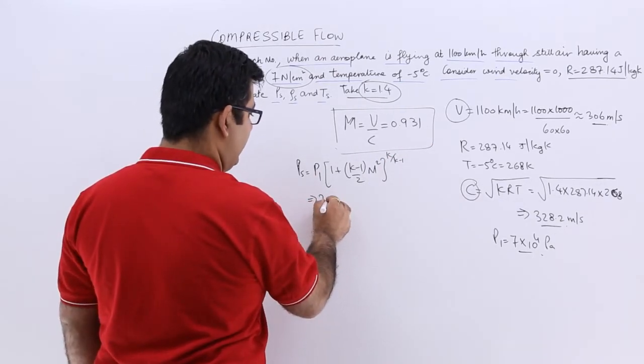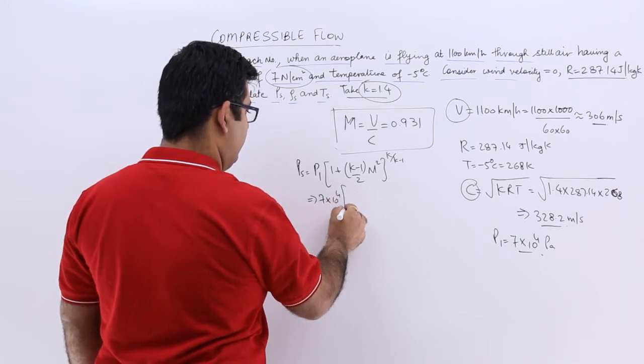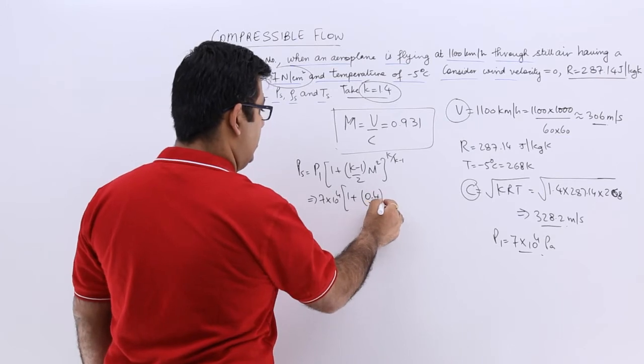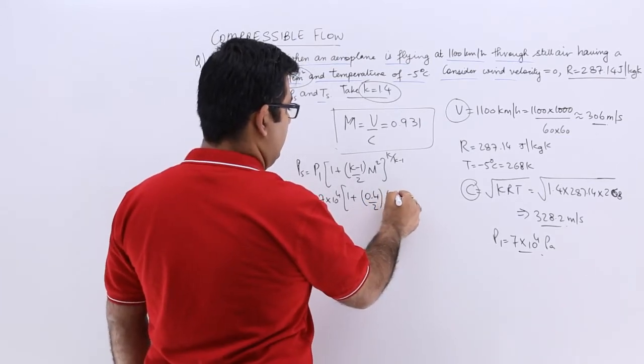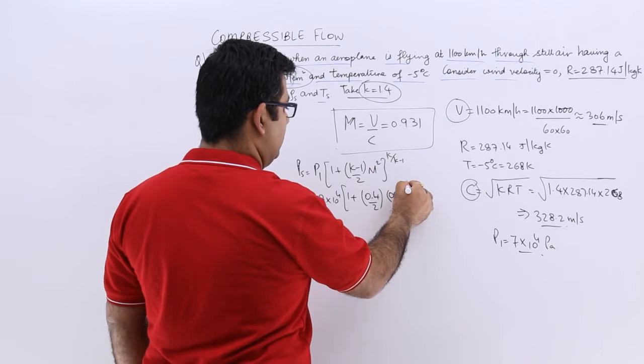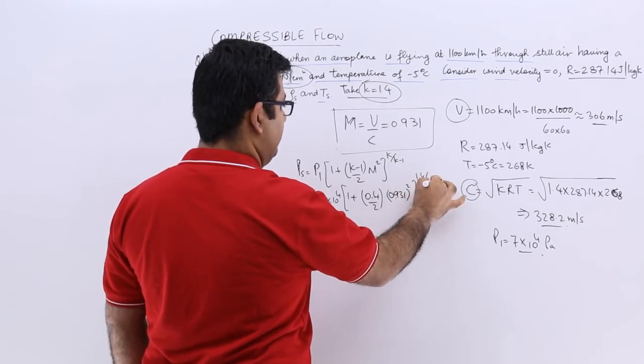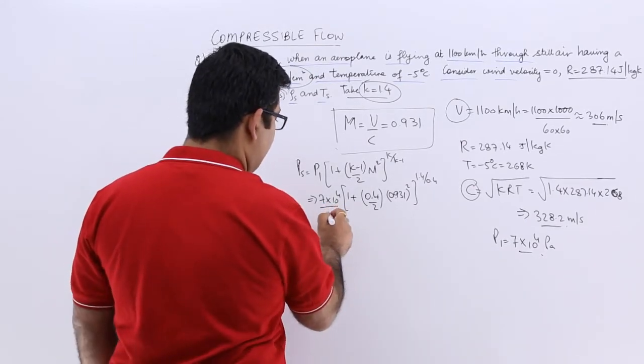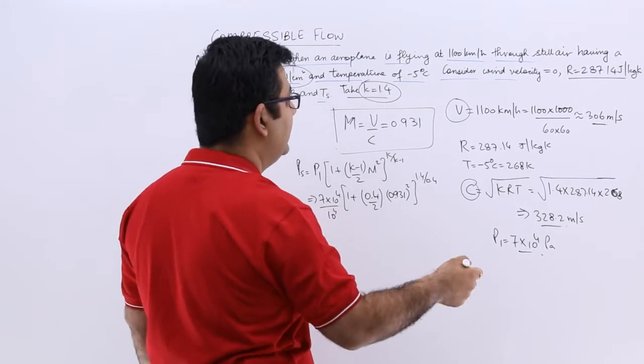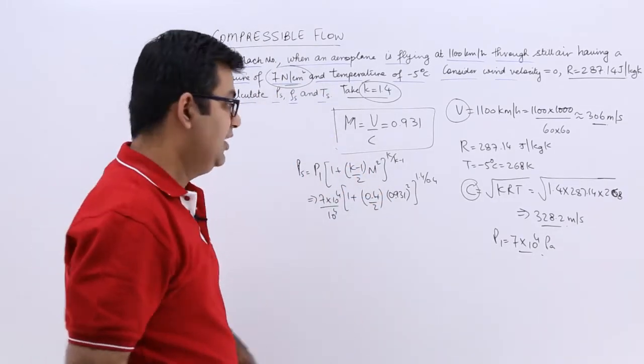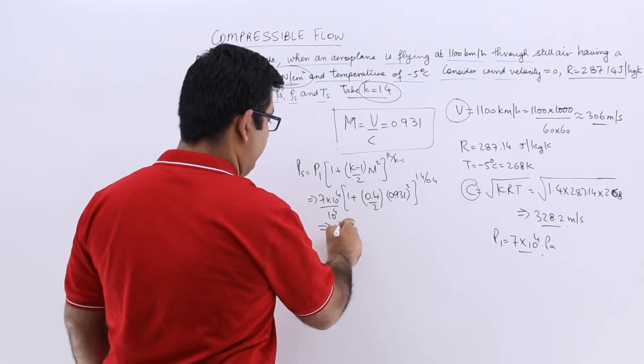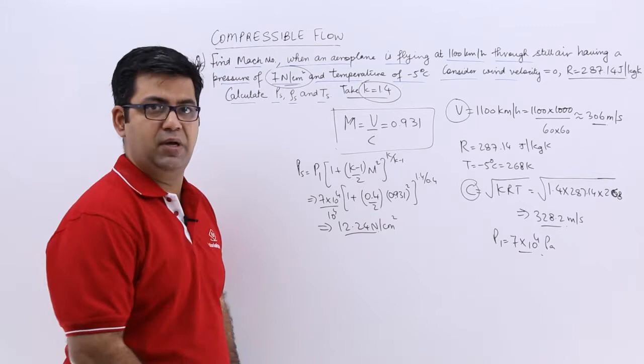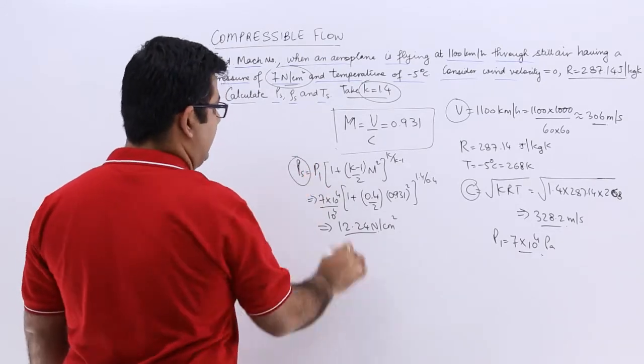So plug in the value, so you will have 7 into 10 to the power 4 into 1 plus 0.4 by 2 into 0.931 square upon 1.4 by 0.4. So upon calculating this, let's divide the entire thing by 10 to the power 4, so you have to get the answer in newton per centimeter square only. This would become 12.24 newton per centimeter square. So that is the value of your stagnation pressure.